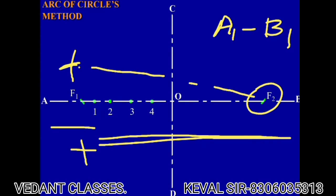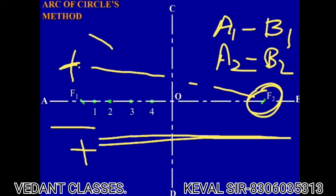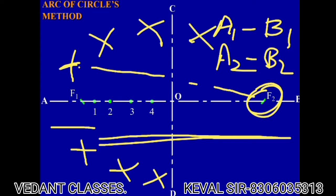Then take a distance A2, put it at F1 and put an arc, then take distance equal to B2 and from F2 put an arc. The same thing you just need to do at the bottom part. Keep going like this and you will get various points.